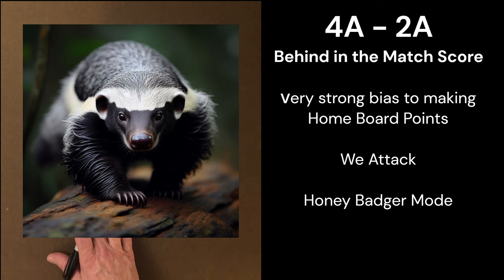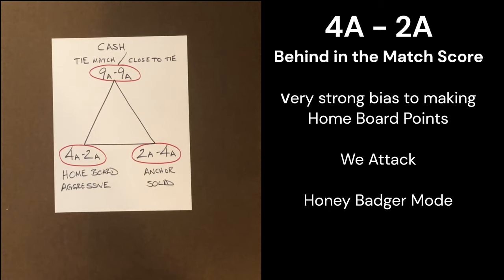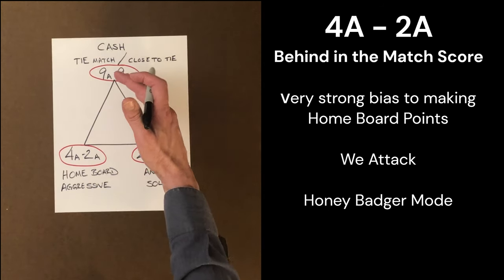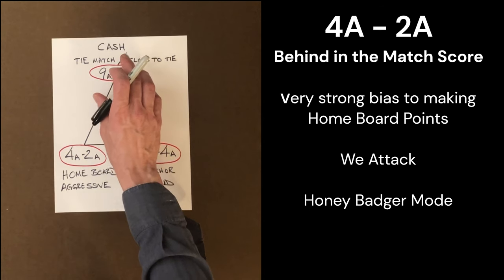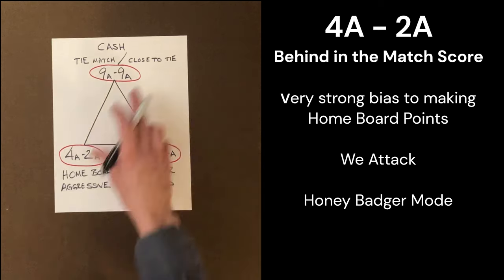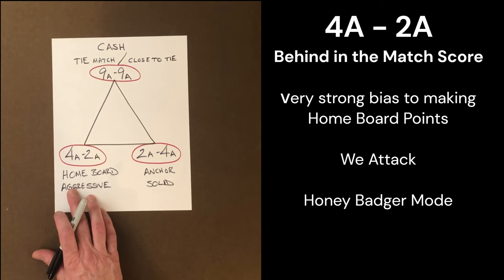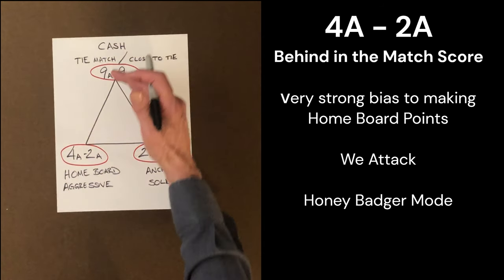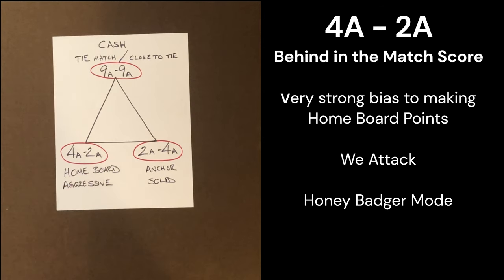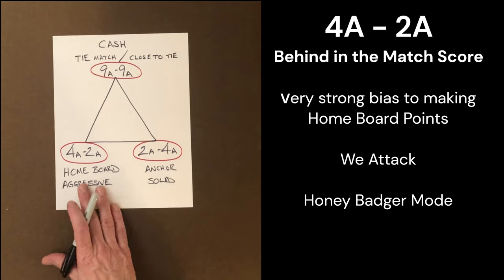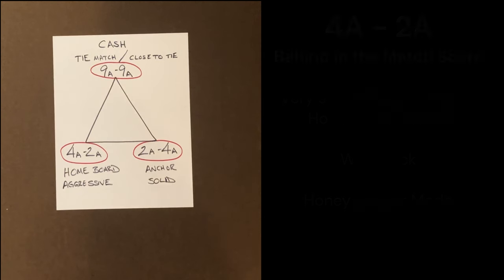Now once we learn this 4 away 2 away, we've done a great thing for ourselves. Because as we start to fall behind in the match, we're going to slowly move our strategy that we've learned from 9 away 9 away toward our strategy for 4 away 2 away. So in between being tied in the match and being behind in the match, we can make an adjustment and an estimate of what our level of aggression is and what our priorities are in our game.